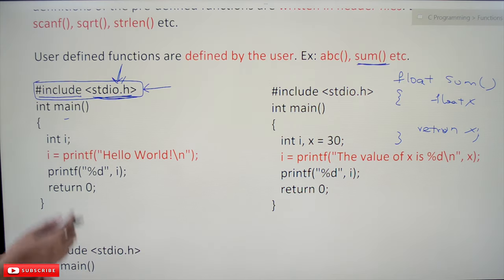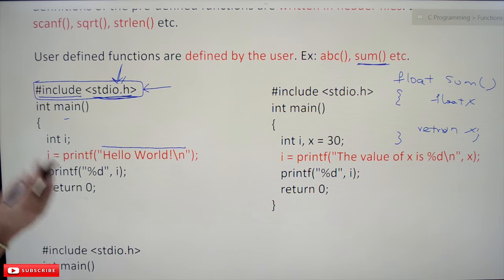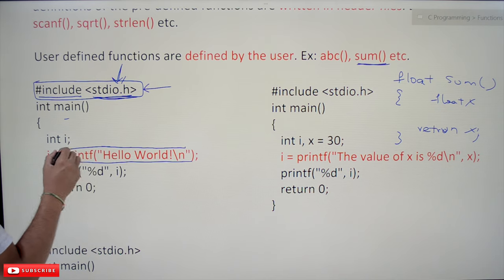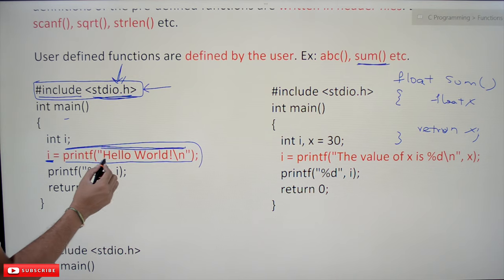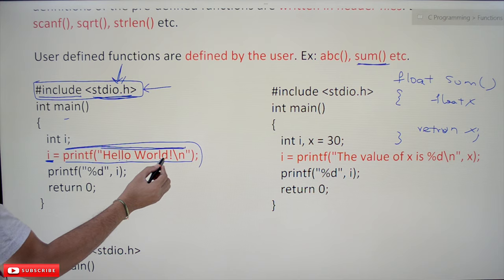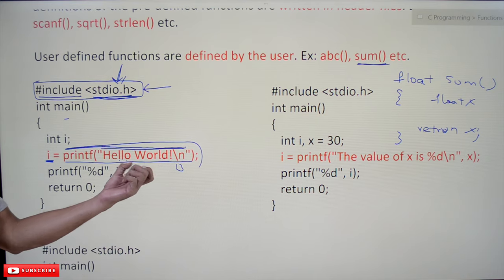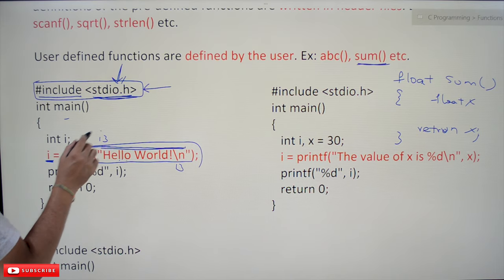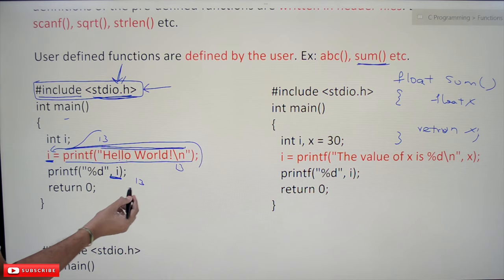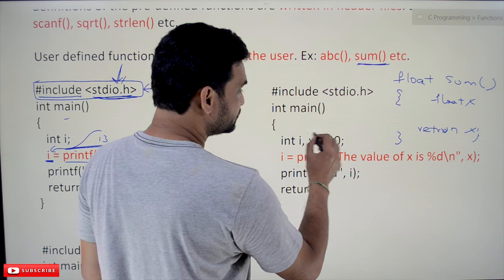What is the return value of printf? printf will return the number of characters that are printed. Here we have assigned the printf function to a variable — hello world will get printed and the return value of this function is the number of characters that has been printed. Counting: 1, 2, 3, 4, 5, 6, 7, 8, 9, 10, 11, 12, and the newline is also a character, so 13 characters. This 13 — the number of characters, which is an integer — will get assigned to I. If you print I, it is going to print 13.